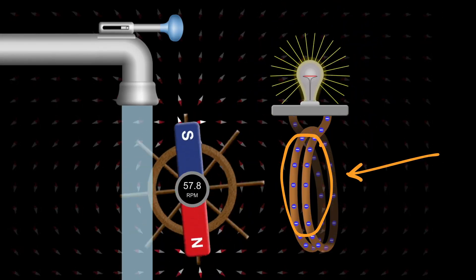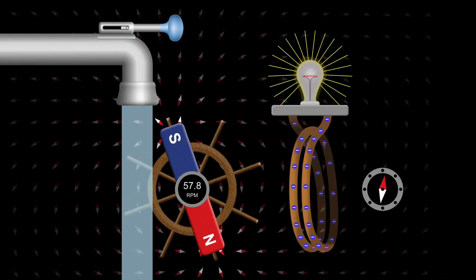Inside the coil, little blue dots with minus signs appear. These represent moving electrons, or electric current.